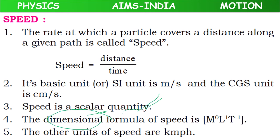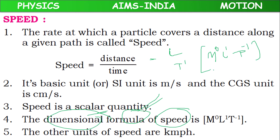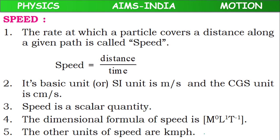The dimensional formula of speed: distance is length, time is T. So there is no mass, one length, and T in the denominator — making it T⁻¹ in the numerator. The dimensional formula of speed is M⁰L¹T⁻¹. Other units of speed include kmph (kilometer per hour).